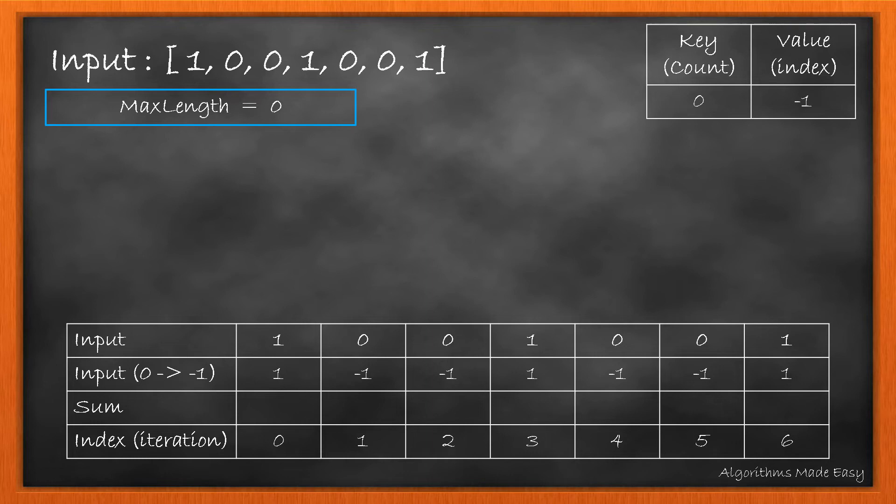Here are the input array, the updated array for simplicity, the sum which is left blank for now, and the index or iteration. Now, let's start iterating.